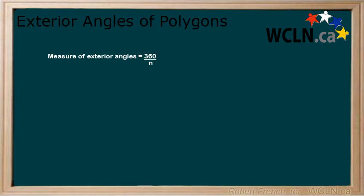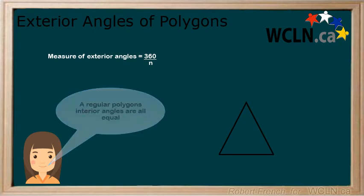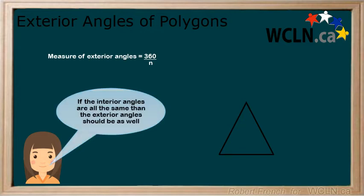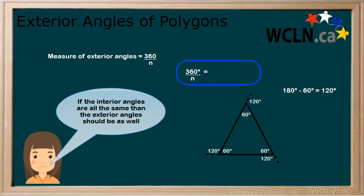For regular polygons, we can determine the measure of the exterior angles by dividing 360 degrees by n. A regular polygon's interior angles are all equal, so the exterior angles should be as well. Take a look at this regular polygon — each interior angle is 60 degrees. Therefore, each exterior angle is 120 degrees, because 180 minus 60 equals 120. Let's confirm this with our formula: 360 degrees divided by n. There are three sides, so replace n with 3. 360 degrees divided by 3 equals 120 degrees — the same answer as calculating it by hand.